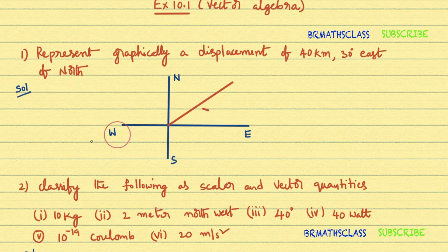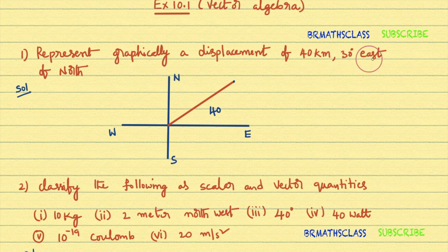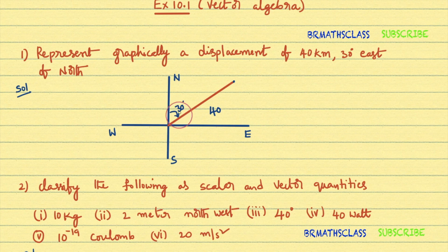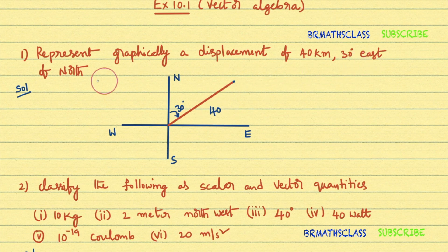Suppose this is the vector having magnitude 40 kilometers. Now, 30 degrees east of north — this is the direction, 30 degrees east of north. So we have represented a vector graphically whose displacement is 40 kilometers and whose direction is 30 degrees east of north. I hope you understand this first question.